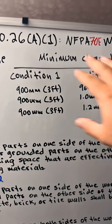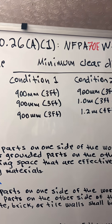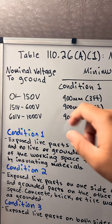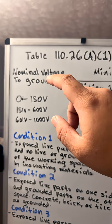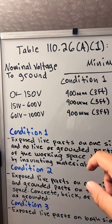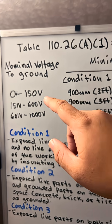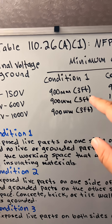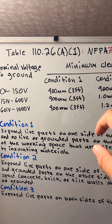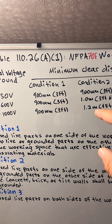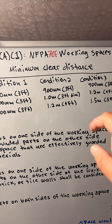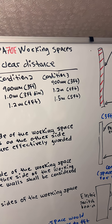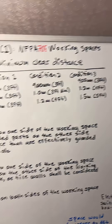As you can see here in the table, for the nominal voltage to ground from 0 volts to 150 volts: condition 1 is 3 feet, condition 2 is 3 feet, and condition 3 is 3 feet.